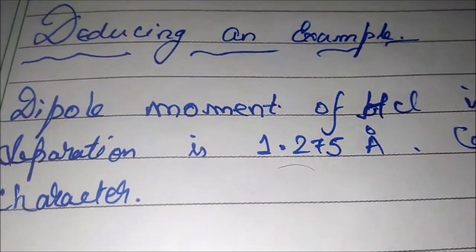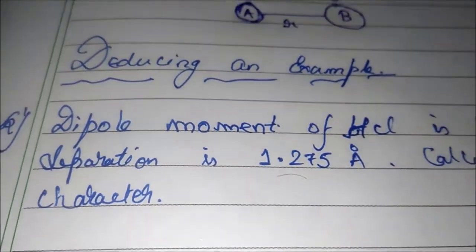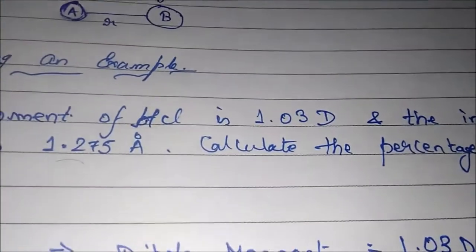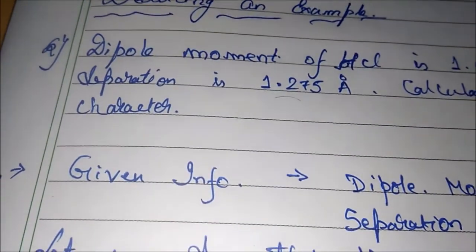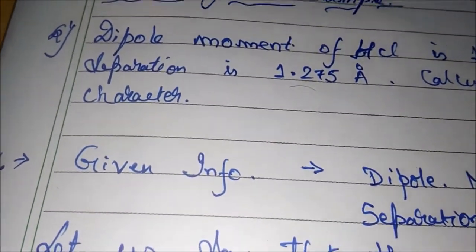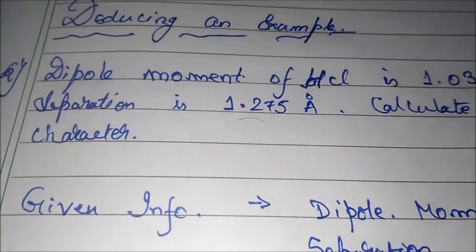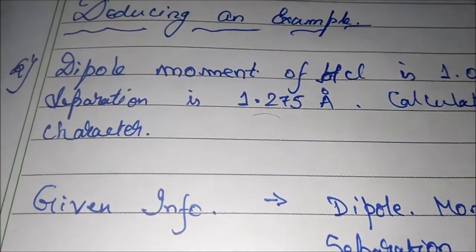So let us move to the question. The question says the dipole moment of HCl (hydrochloric acid) is 1.03 D (Debye), and the internuclear separation—the separation between hydrogen atom and chlorine atom—is 1.275 Angstrom. Calculate the percentage ionic character.